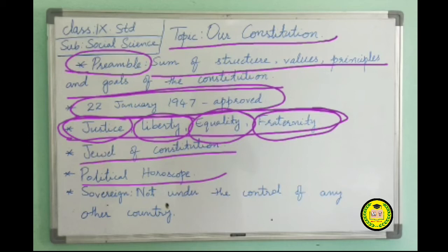The preamble of the Constitution begins with 'We the citizens of India.' The Indian Constitution is framed by Indians and strives to fulfill the dreams of Indians. In this we have to see about four key terms: Sovereign, Socialistic, Secular, and Democratic Republic.